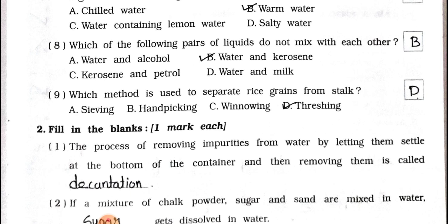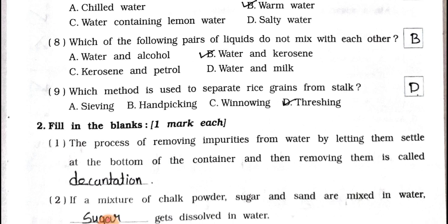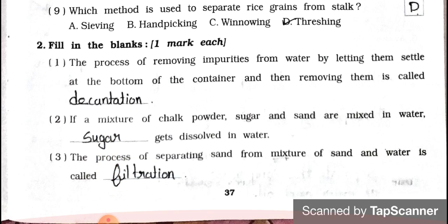Number nine: Which method is used to separate rice grains from stock? (a) Sieving, (b) Hand picking, (c) Winnowing, and (d) Threshing. Answer is option (d) — threshing.